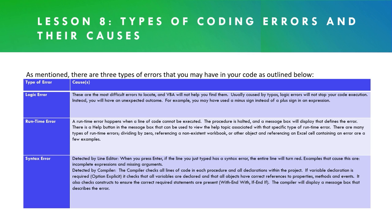Then there are runtime errors. A runtime error happens when a line of code cannot be executed. The procedure is halted and a message box displays that defines the error. There is a help button in the message box that can be used to view the help topic associated with that specific runtime error. They're caused by things like dividing by zero, referencing a non-existent workbook, worksheet, or other object, or referencing an Excel cell that contains an error.